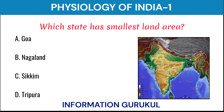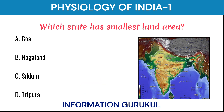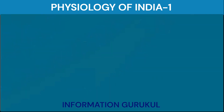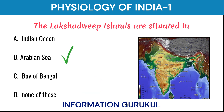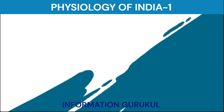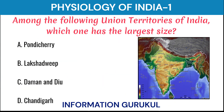Which state has the smallest land area? Goa. The Lakshadweep Islands are situated in the Arabian Sea. Among the following Union Territories of India, which one has the largest size? Puducherry.